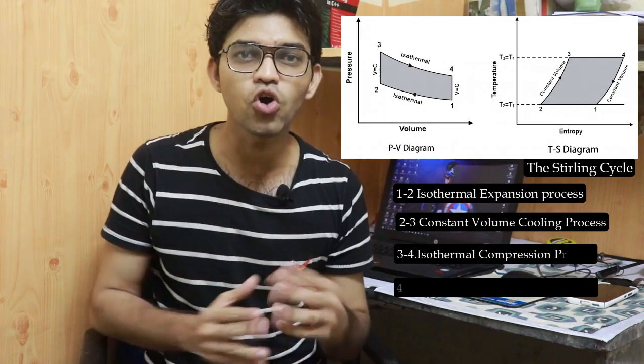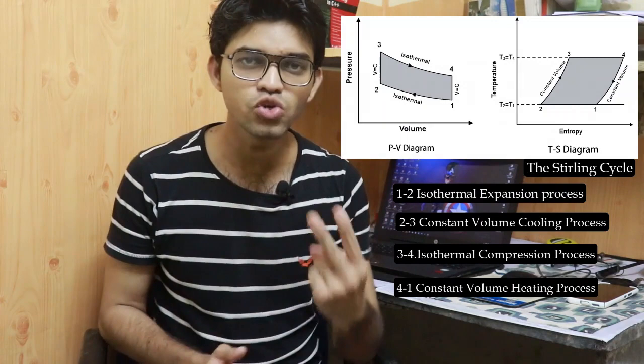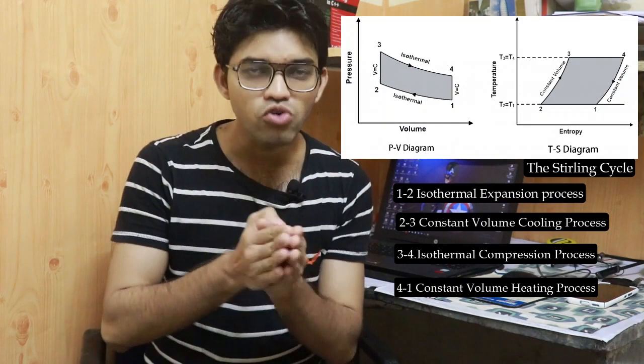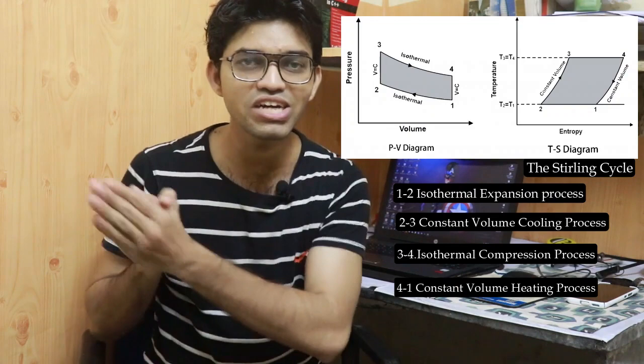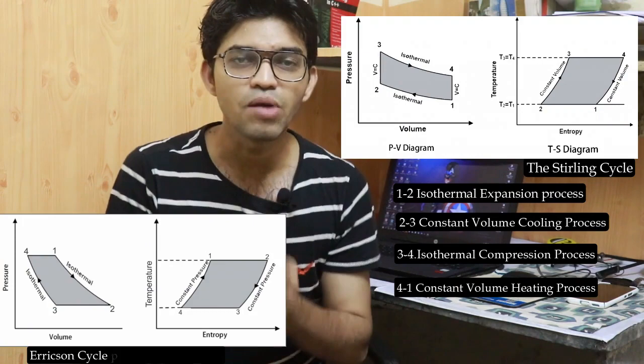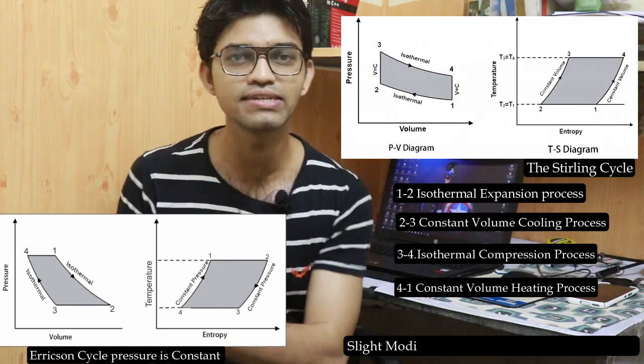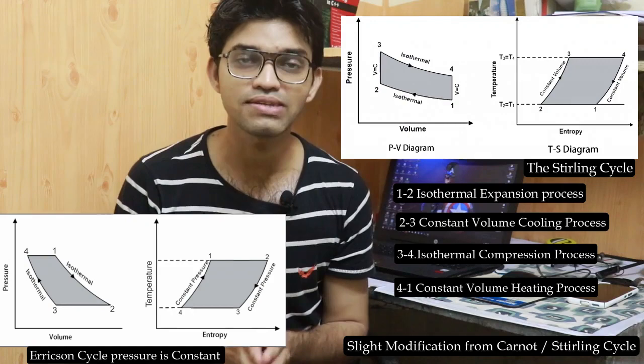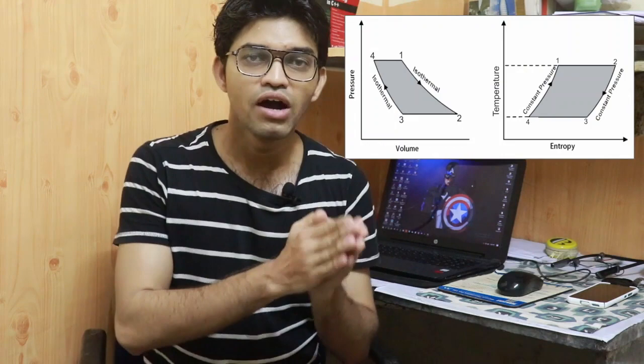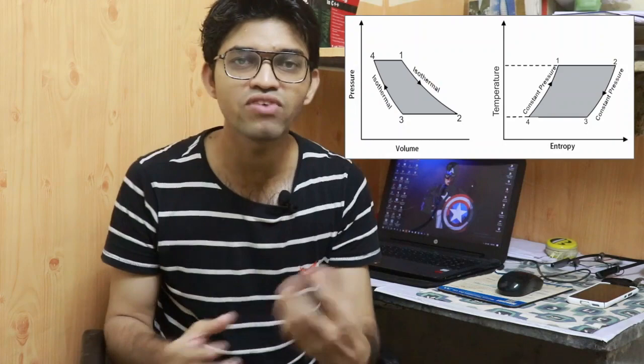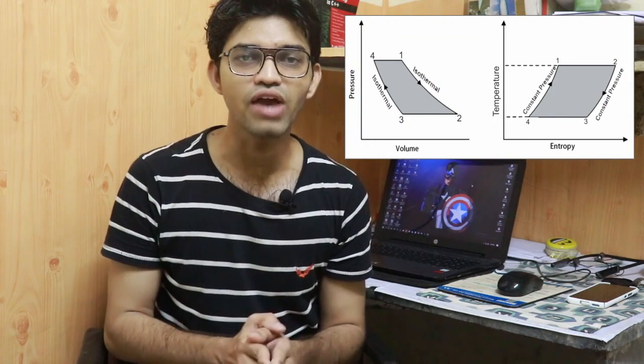The Stirling cycle consists of: isothermal expansion, constant volume cooling, isothermal compression, and constant volume heating. In the Ericsson cycle, we replace those constant volume processes with constant pressure processes — keeping pressure constant. So the Ericsson cycle also has four thermodynamic processes, similar to the Carnot and Stirling cycles, but with constant pressure replacing constant volume.